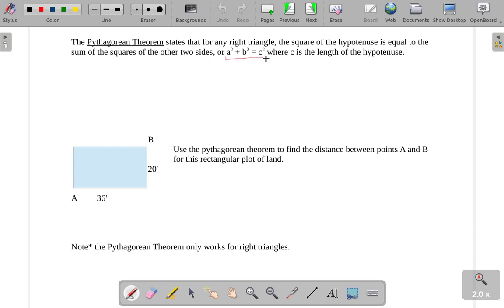Instead, what we tend to do is write it out something like this: A squared plus B squared equals C squared, where C is the length of the hypotenuse. That would make A and B the lengths of the two legs of the right triangle.